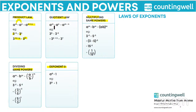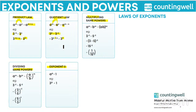Quotient law means we are taking the division of two exponents. Here we have base a which is the same, so we take a and subtract the exponents m and n, giving a to the power m minus n. For example, to divide 3 to the power 5 by 3 to the power minus 2, we write 3 to the power 5 minus (minus 2). Since minus minus becomes plus, we have 5 plus 2, which is 7.